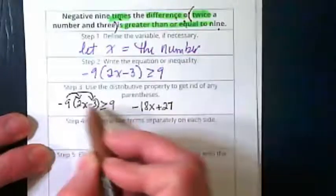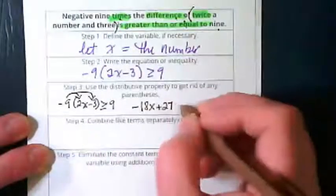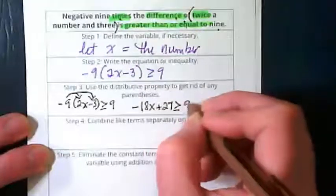Negative 9 times negative 3 is going to give me positive 27 is greater than or equal to 9.